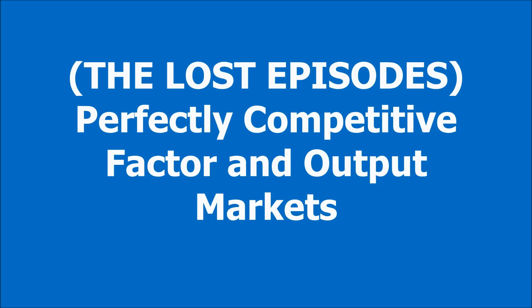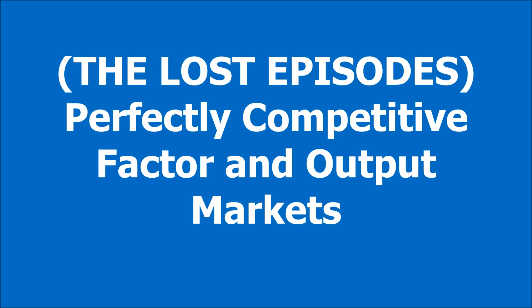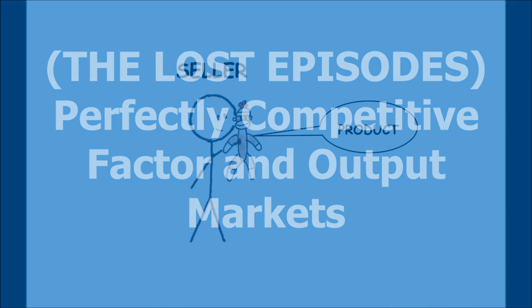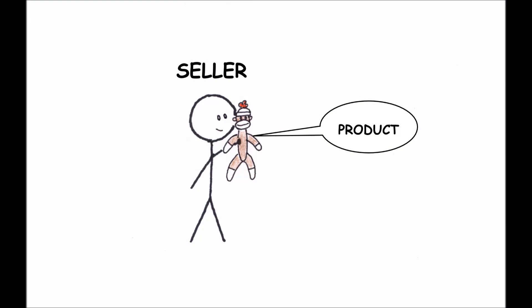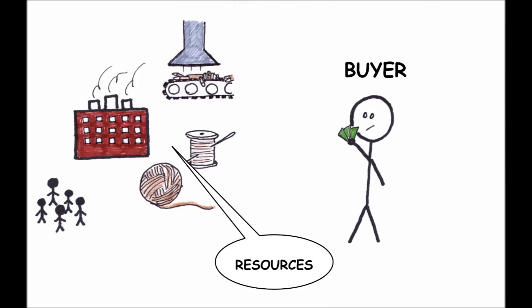To consider the structure of the factor market, it's important to remember that the firm is both a seller and a buyer. The seller of an output or end product, and the buyer of the resources used to make that product.